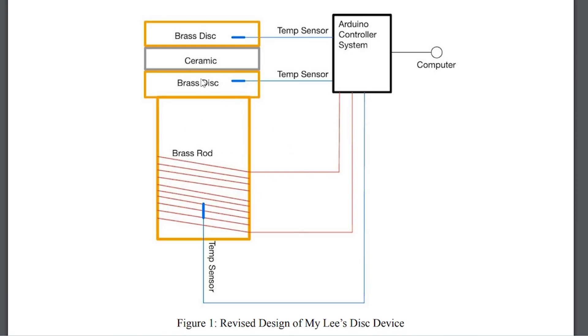The bottom brass disk is heated to a constant temperature using some type of heater and feedback system. The heat then flows via conduction through the ceramic or other test material and into the top brass disk. This heat then dissipates via convection and radiation into the outside world.